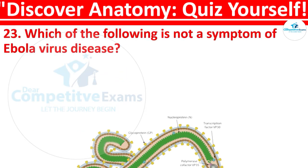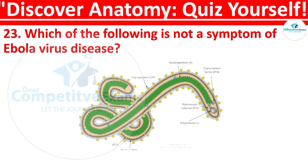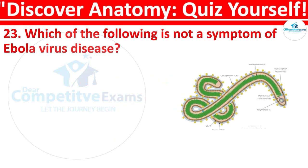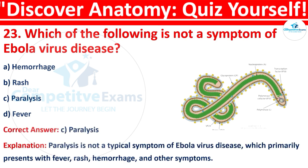Question 23: Which of the following is not a symptom of Ebola virus disease? Your options are: hemorrhage, rash, paralysis, or fever. The correct answer is C, that is paralysis. Paralysis is not a typical symptom of Ebola virus disease, which primarily presents with fever, rash, hemorrhage, and other symptoms.